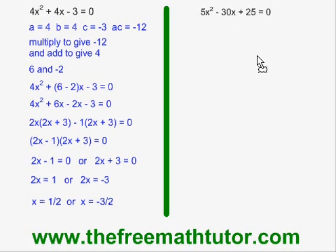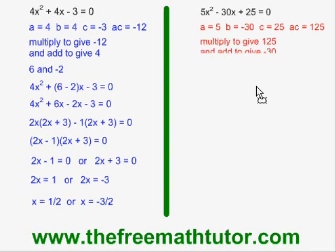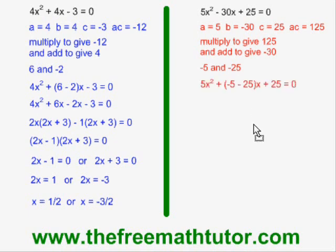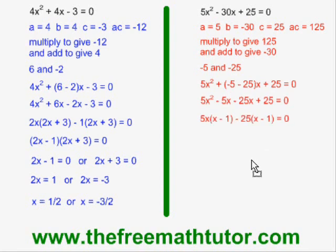In the example on the right, I define my a, b, c, and my a·c. I ask the question: what two numbers multiply to give 125 and add to give −30? Those numbers are −5 and −25. I replace the middle term with those two numbers, break up the bracket, and do common factor with the first half and the second half.